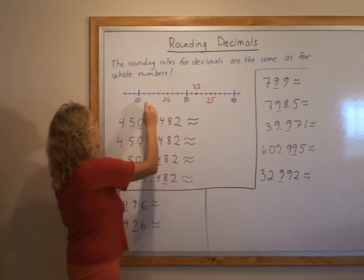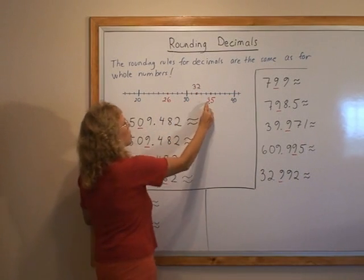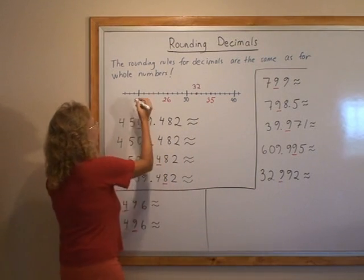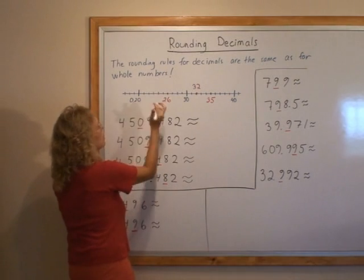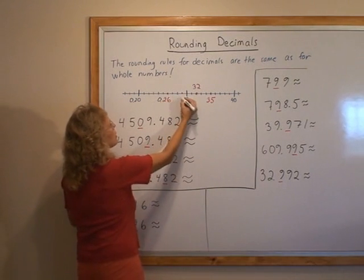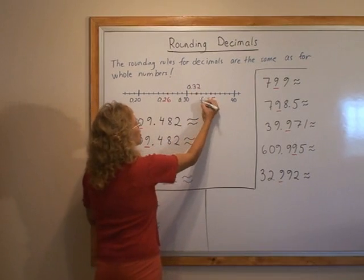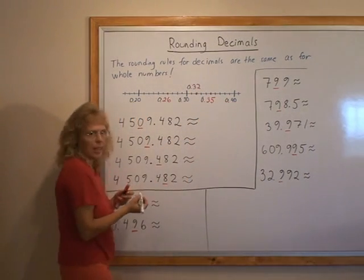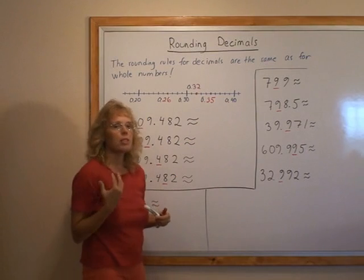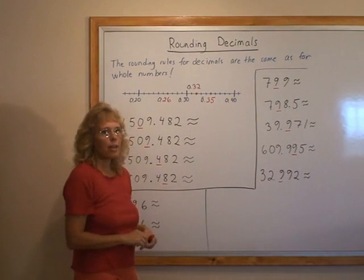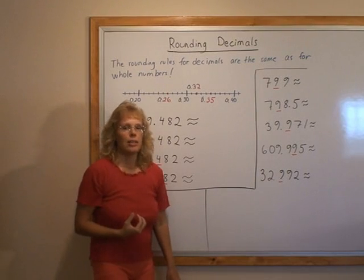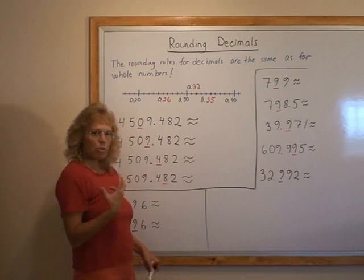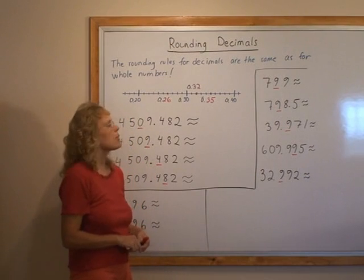Or I could even change this one more time and make this to be 0.20 or 2 tenths or 20 hundredths. This could be 0.26, and it still works the same. So we can just use the normal rounding rules for all numbers, just the decimal numbers.